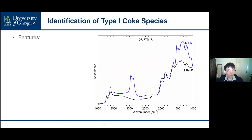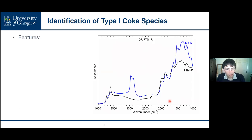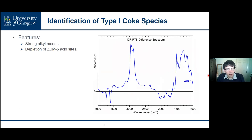In terms of identifying the coke species, infrared analysis of the type one coke produced at 473 K identifies strong alkyl modes below 3000 wavenumbers, and the difference spectrum shows that the ZSM-5 acid sites are being depleted by the formation of the coke species.